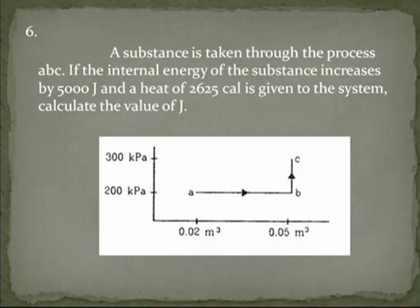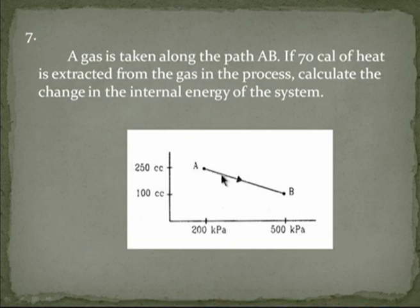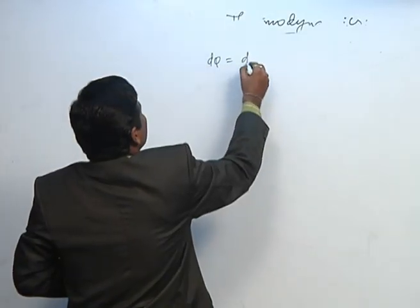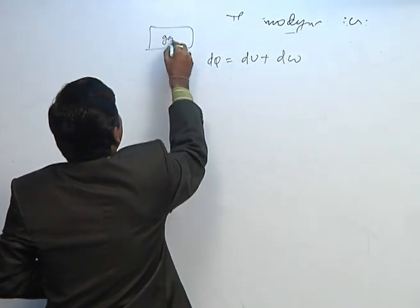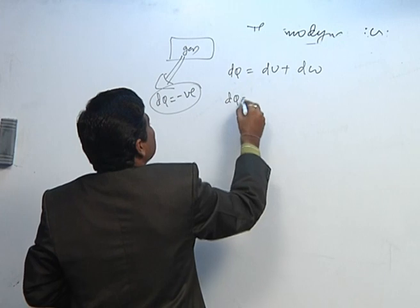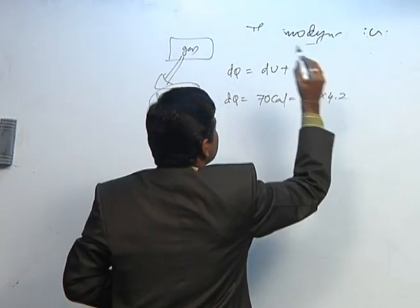Next question — it is also a non-cyclic process. If you observe, it starts from A and passes to B. At A the volume is 250 centimeter cube and at B it is 100 CC. The process goes under compression. The question asks: if 70 calories of heat is extracted from the gas — heat extracted means DQ is negative — calculate the change in internal energy. DQ = DU + DW. Since heat is taken from the system, DQ = negative 70 calories = negative 70 × 4.2 joules.